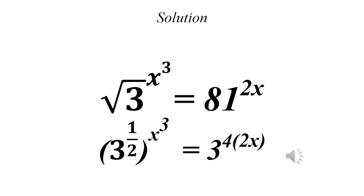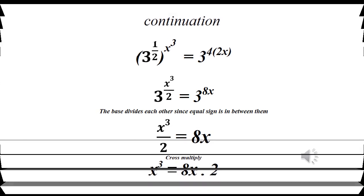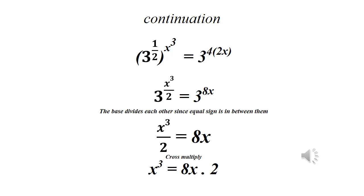We express 81 as 3 raised to power 4, so the right side becomes 3 raised to power 4 raised to power 2x, which equals 3 raised to power 8x. On the left side, the square root is a half power, so we have 3 raised to power (x times 3 divided by 2), that is 3 raised to power 3x over 2.